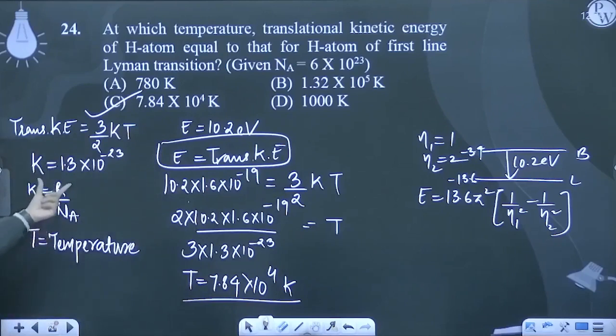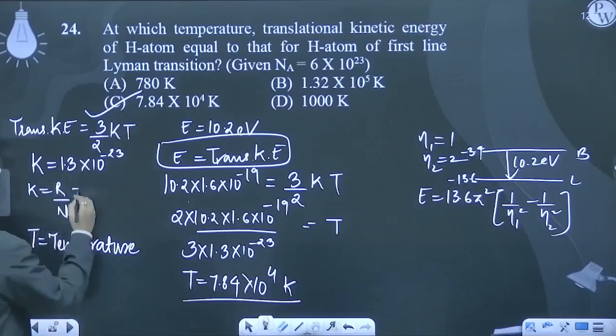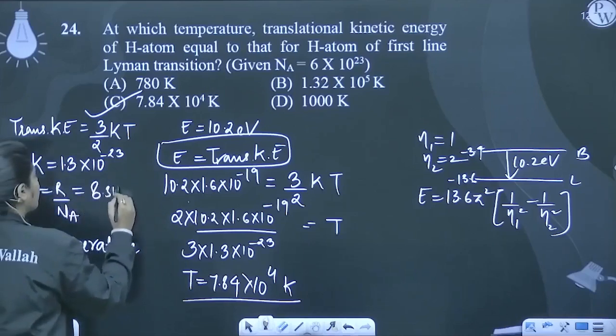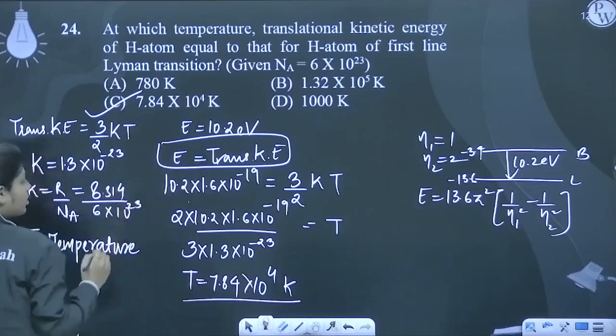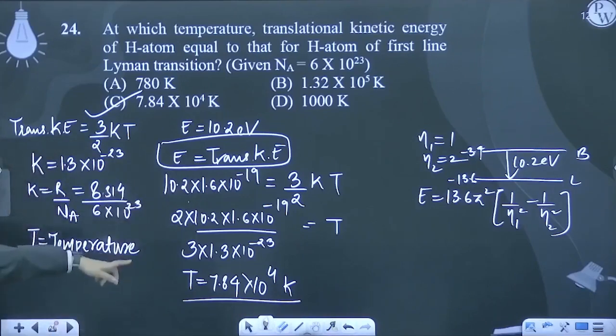If we don't remember the value, then R, the gas constant also can be removed. R is equal to 8.314 upon Na is equal to 6 into 10 to the power 23. So when we do this, then the value will come.